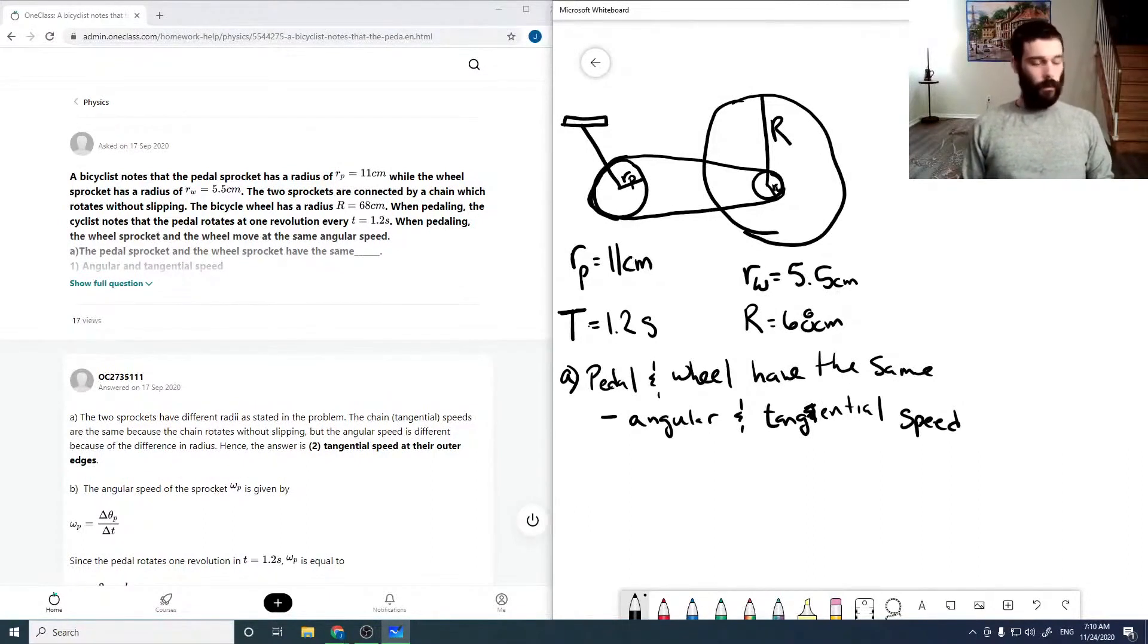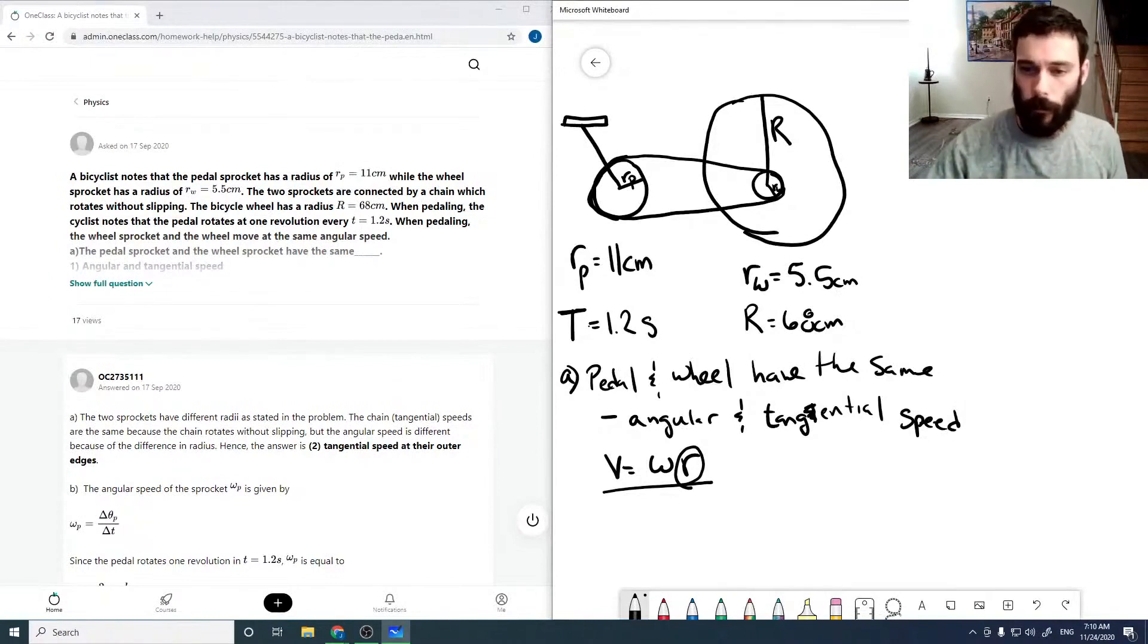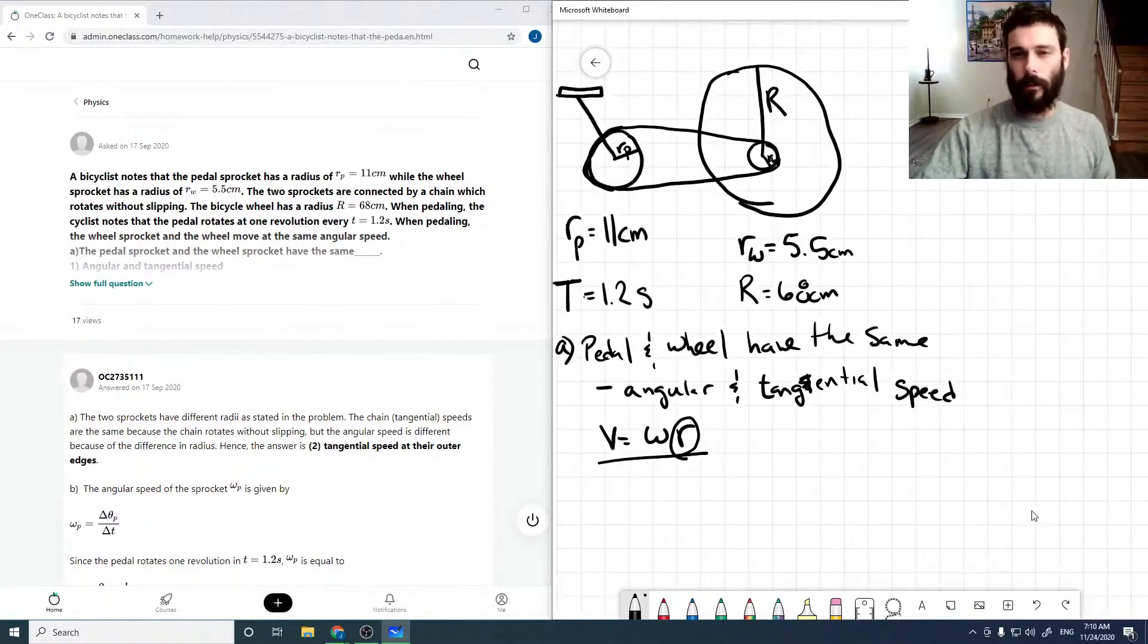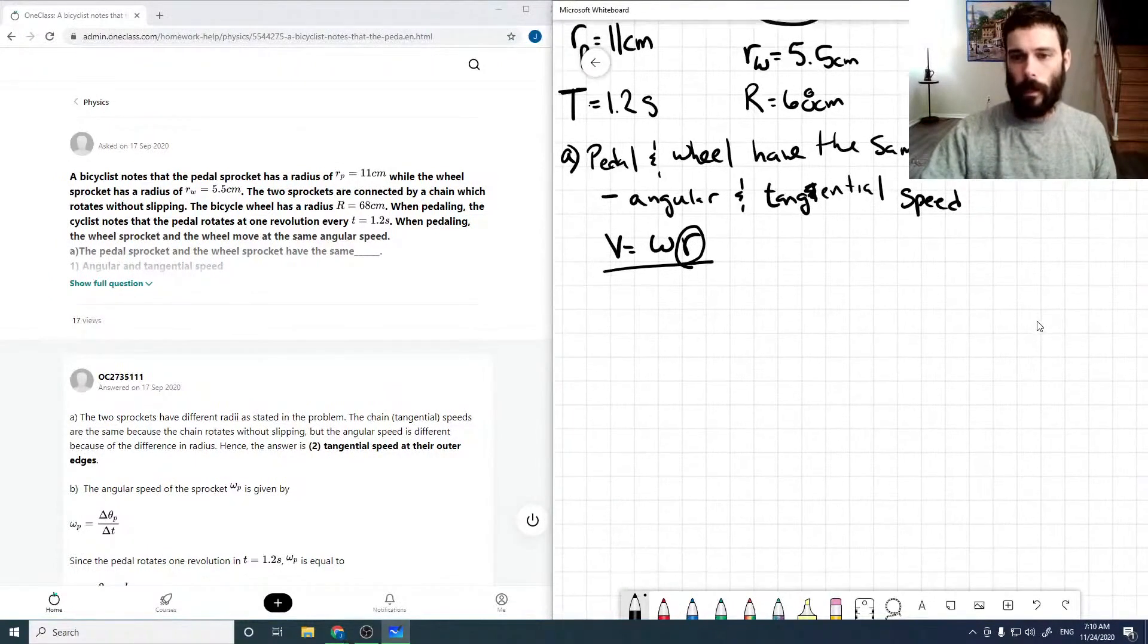Okay, so first of all, V is equal to omega R. So V relates your tangential speed to your angular frequency. As the two have different radii, it's impossible for the two objects to have the same angular and tangential speed. That's just always an impossibility, unless they have the same radius.